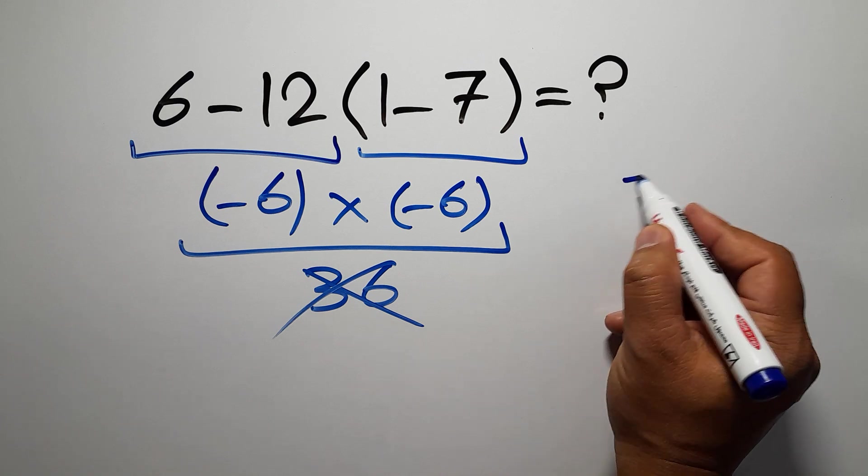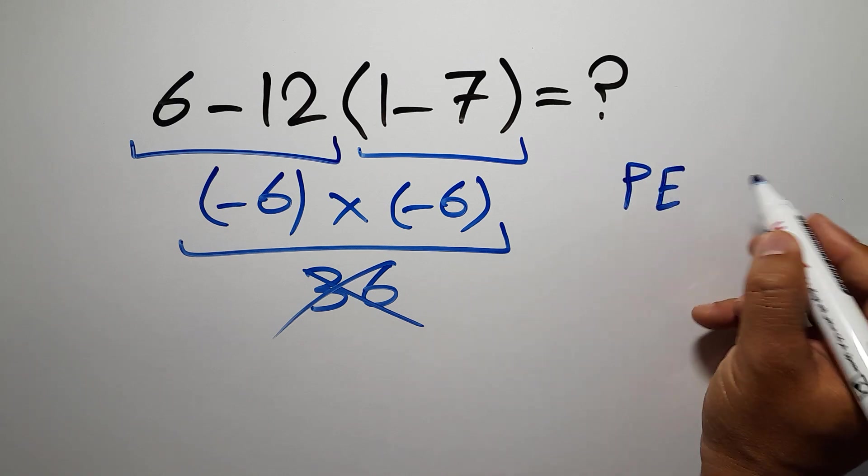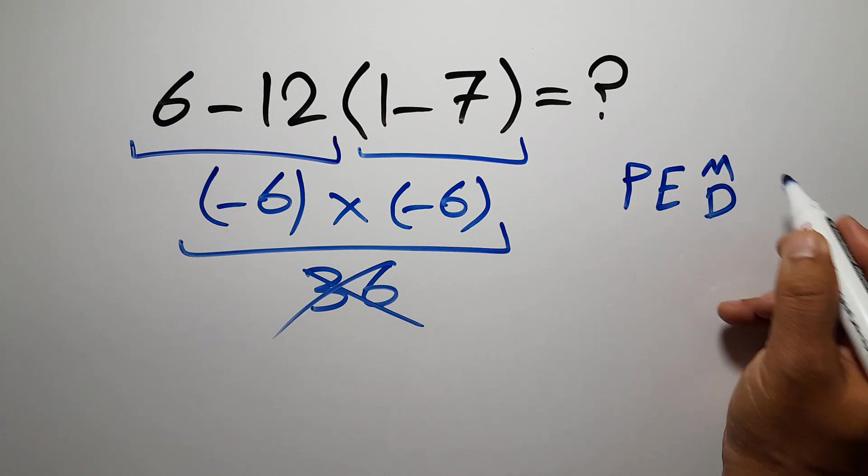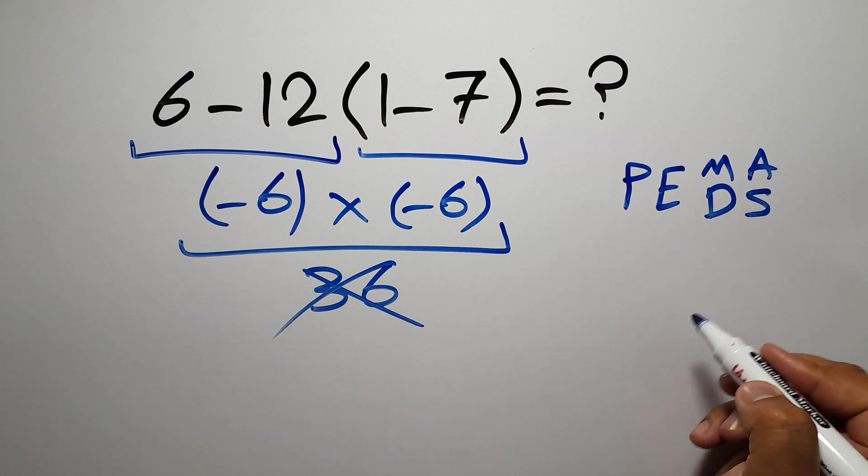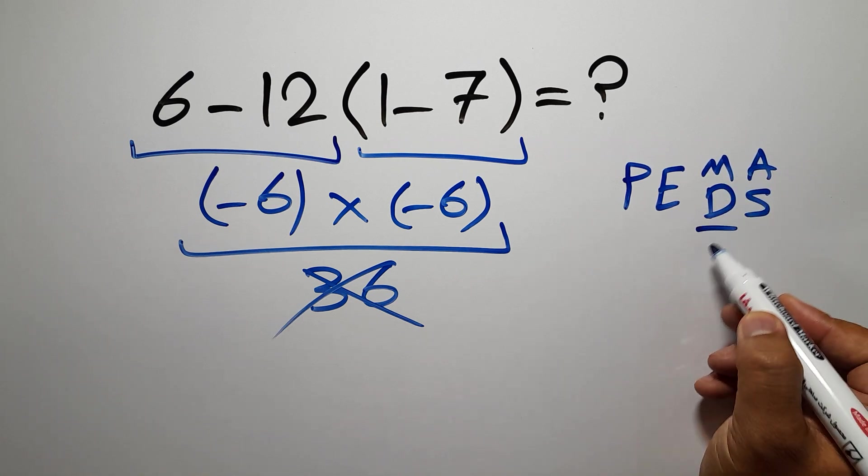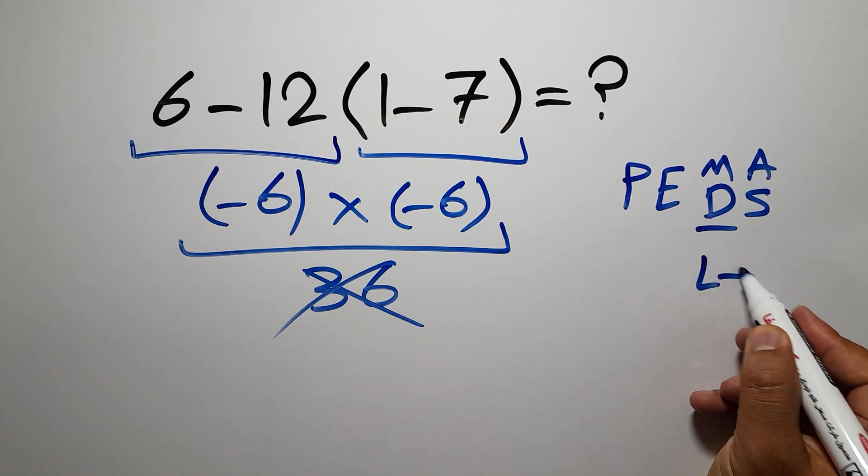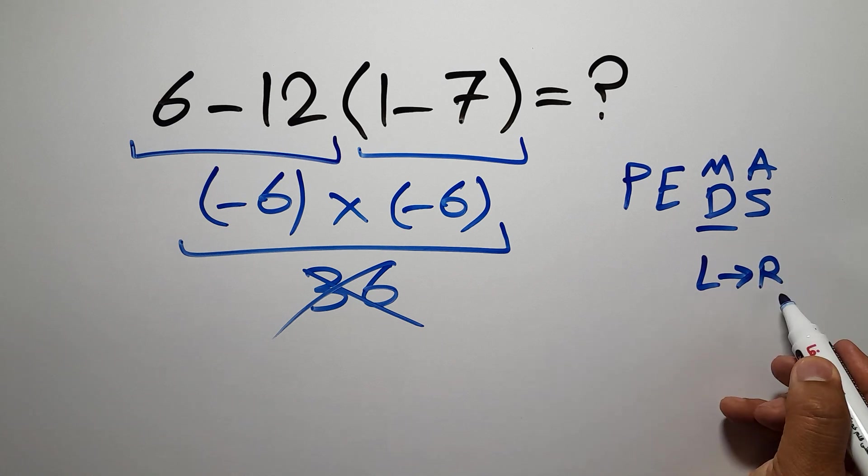According to the order of operations, first we do parentheses, then exponents, then multiplication or division, and finally addition or subtraction. Remember that multiplication and division have equal priority and we work from left to right.